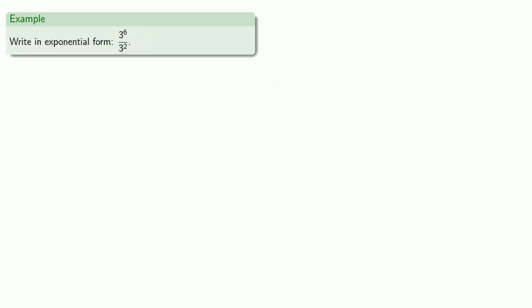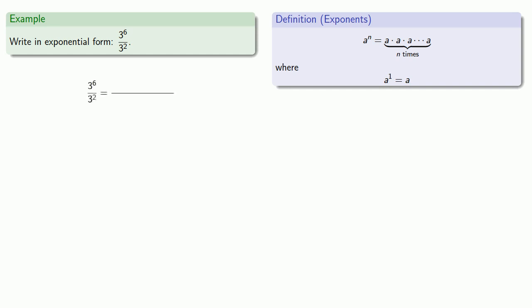What about quotients? What about 3 to the sixth over 3 to the second? So again, it helps to bring in our definition of what an exponential expression is. The numerator, 3 to the power 6, that's 6 factors of 3. The denominator, 3 to the second, that's 2 factors of 3. We can cancel out some of the common factors of 3.